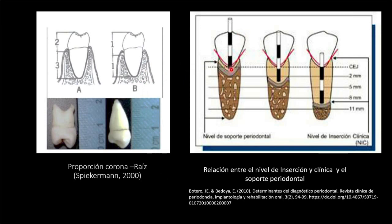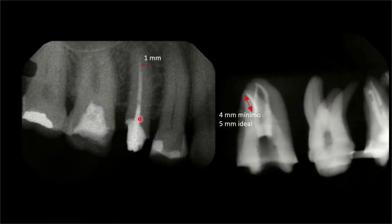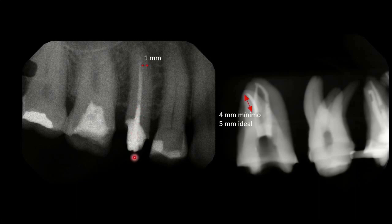La proporción corona-raíz no es lo mismo: un uno a uno —el mismo largo de corona que de raíz— a tener una raíz más larga para un mejor anclaje. Esto se ha investigado desde hace mucho tiempo. Cuando nos llegan pacientes con pernos muy grandes de hace varios años, no podría decir que ha sido un fracaso si lleva más de 10 años. Sin embargo, si la corona fracasó por filtración, hay que quitarlo y analizar la longitud de la raíz, el tratamiento de conducto y cuánta dentina remanente tenemos.